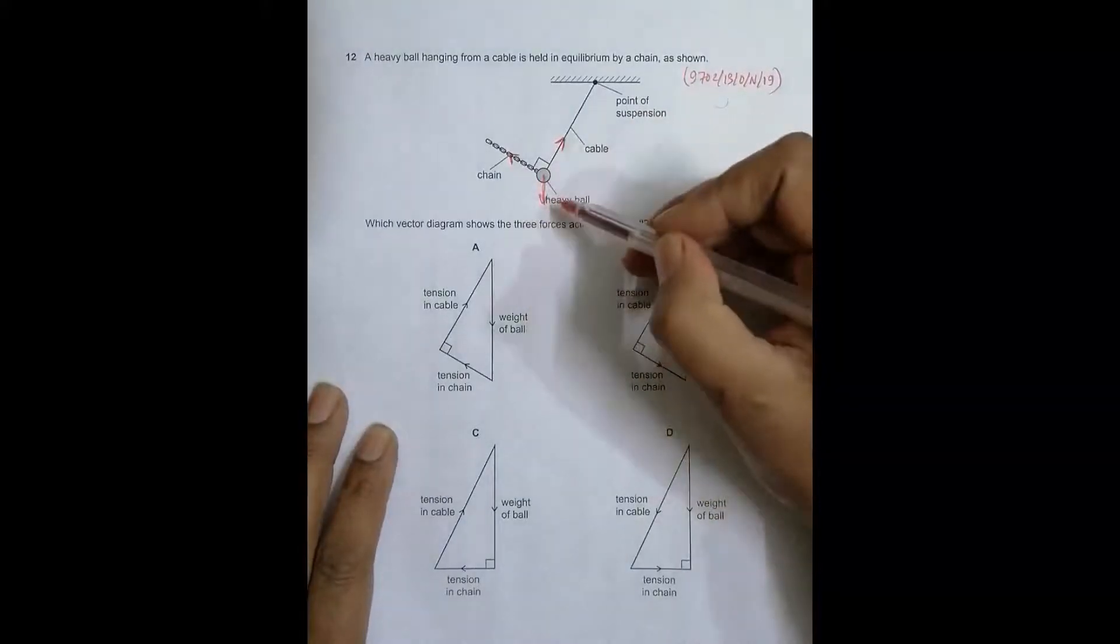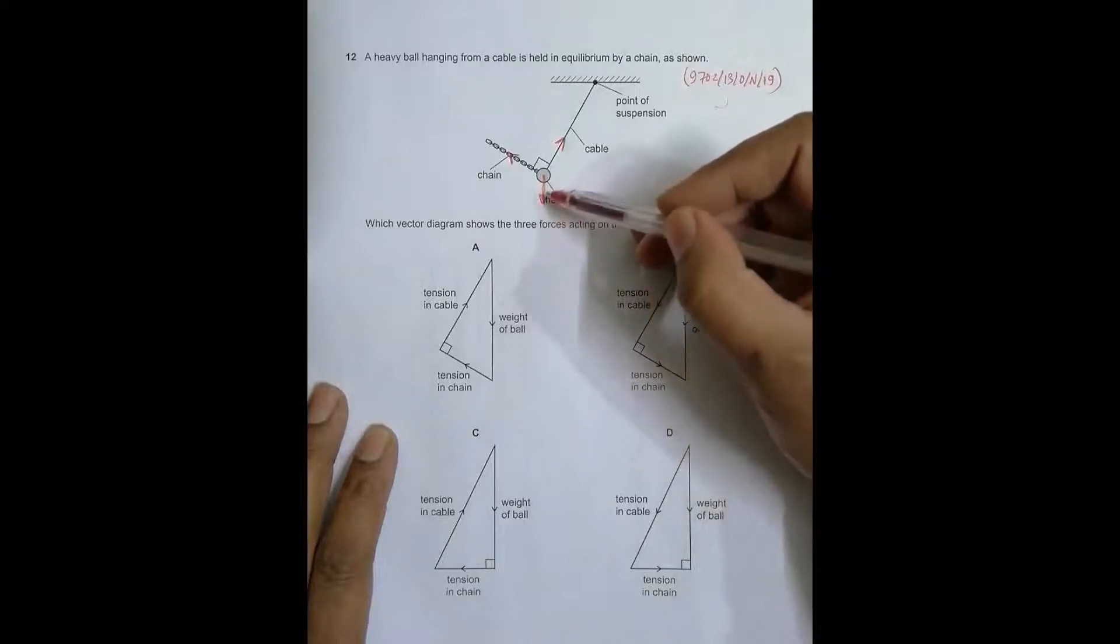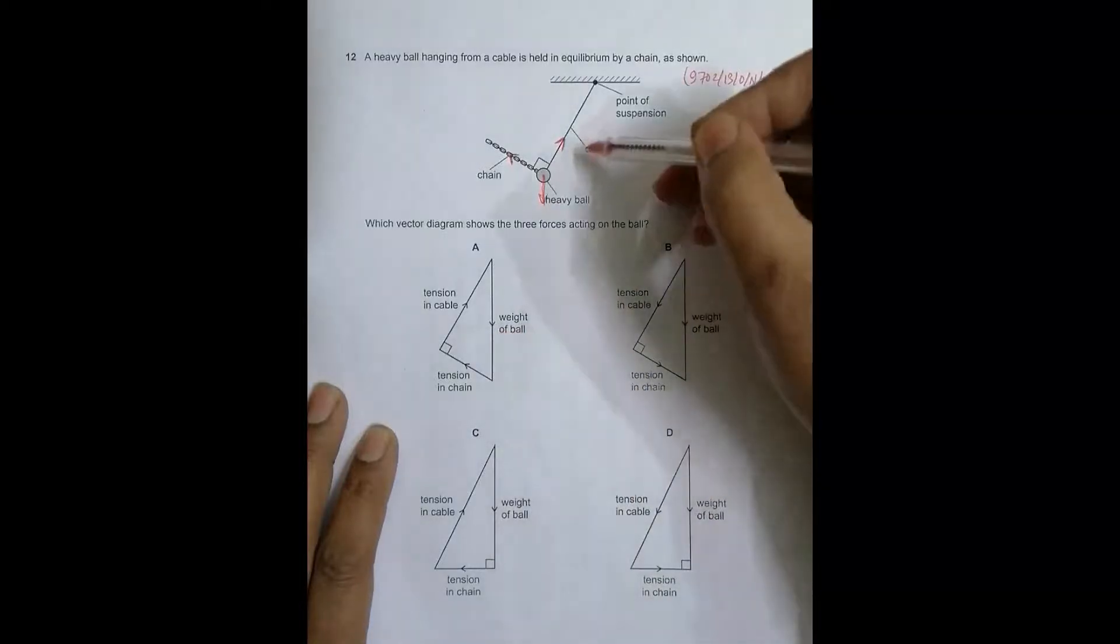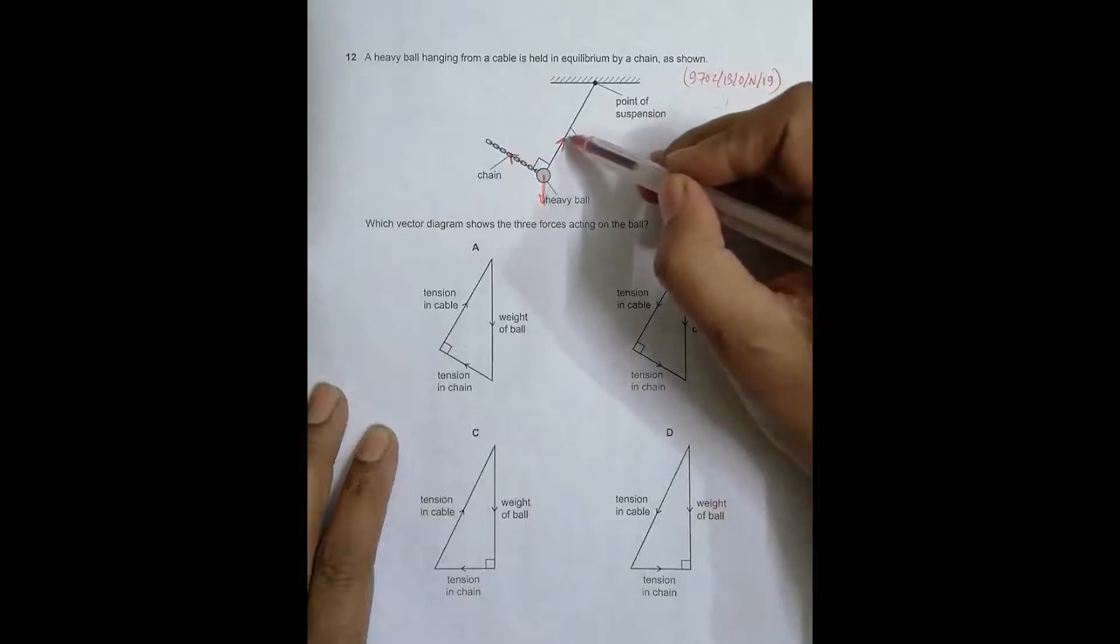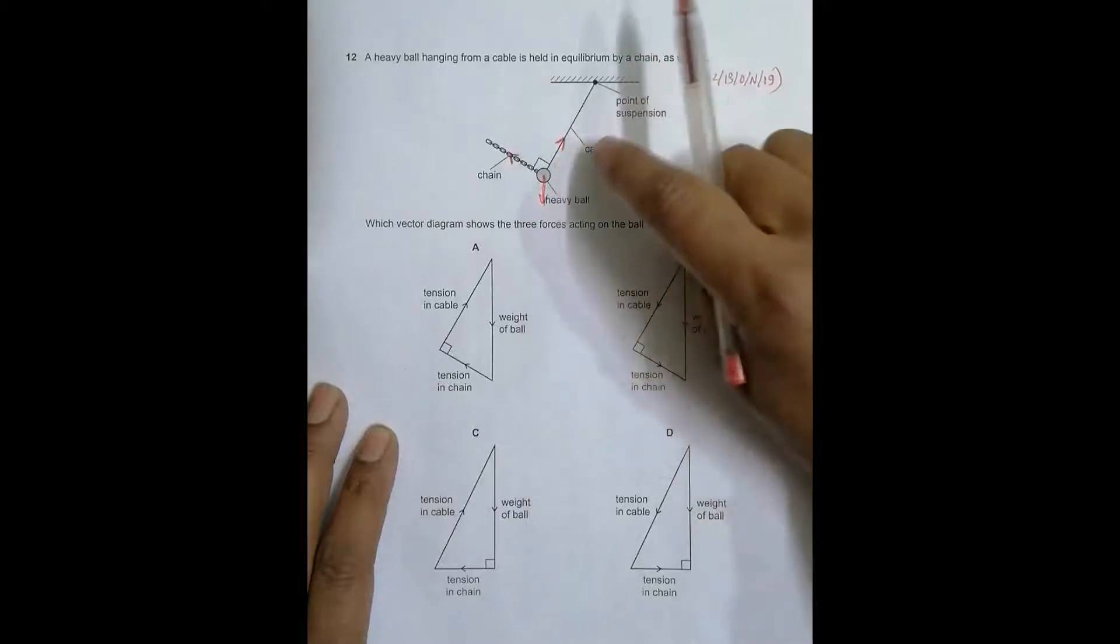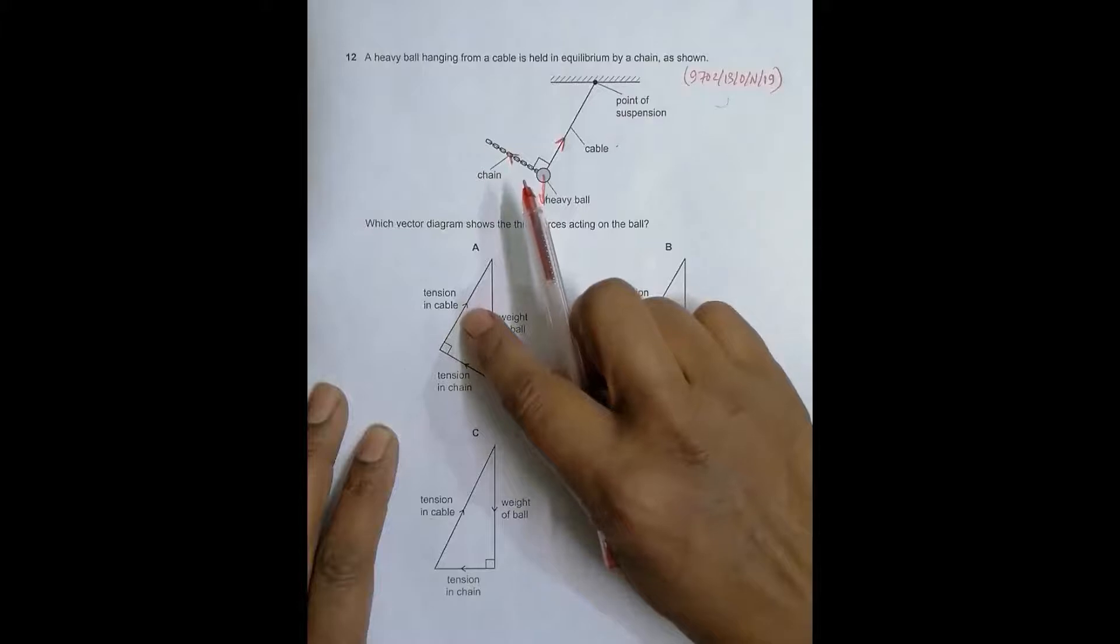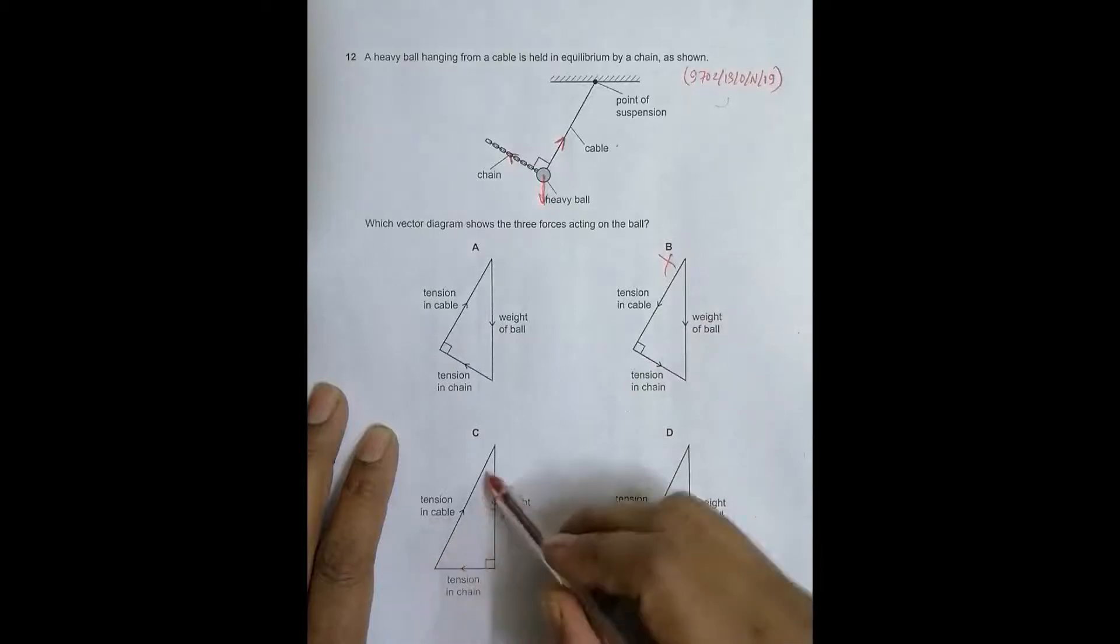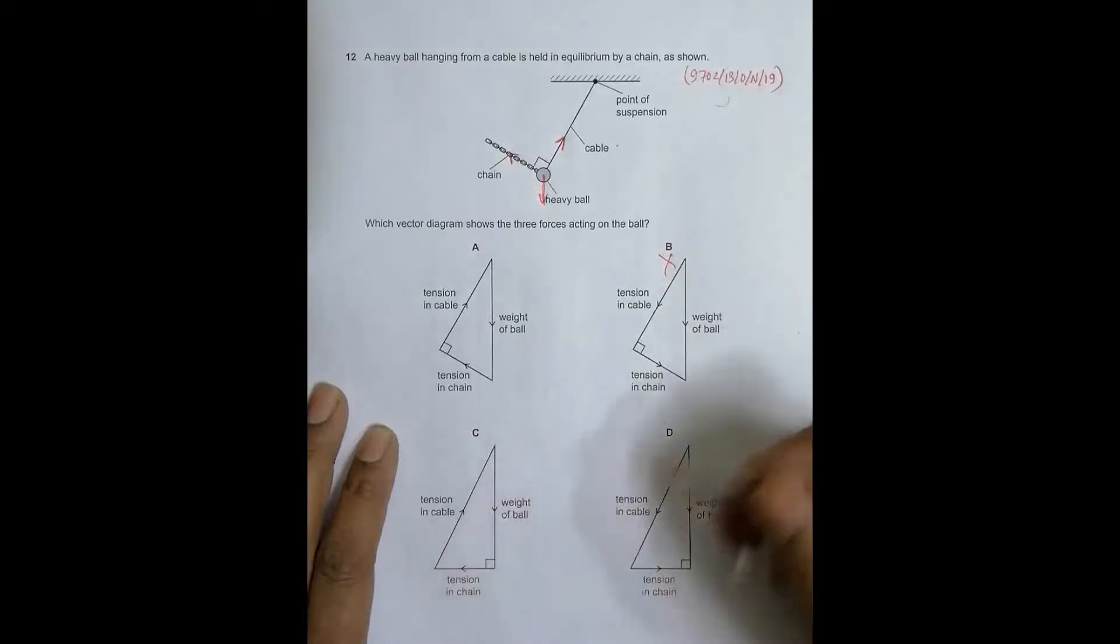Now we have to find a diagram where the weight is downward. In all diagrams we have weight in the downward direction. Then the tension in the cable should be in this direction. This qualifies, this disqualifies. We already have two diagrams which disqualify and two which qualify.